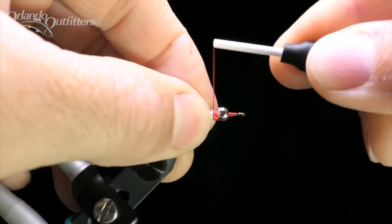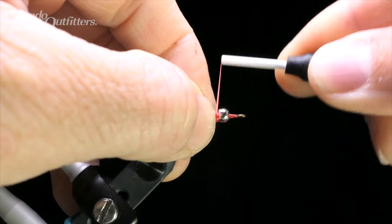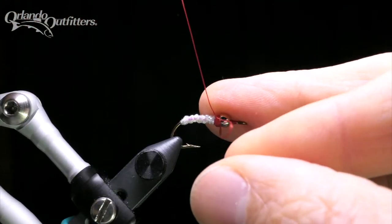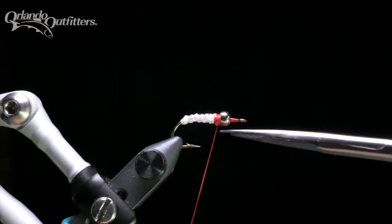Bind the tag end of the sparkle braid down, using the thread to form a red band behind the bead. Tie a whip finish and trim the thread.